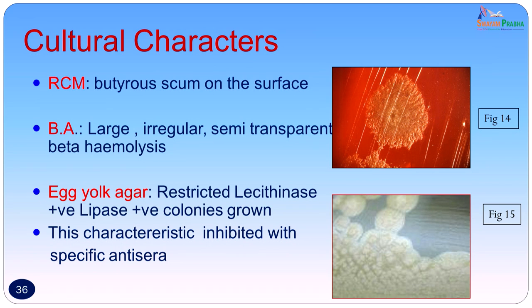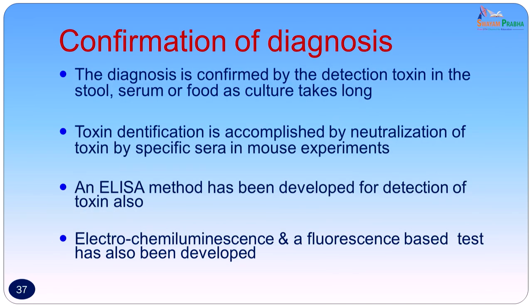If half the plate is covered with antitoxin and colonies are streaked across, both the lecithinase and lipase characteristics of the colony are inhibited. Confirmation of diagnosis is required urgently because the disease is not very common. The diagnosis is confirmed not by detection of the organism but by detection of the toxin in the stool, serum, or food, as culture takes almost seven to eight days. Toxin identification is accomplished by neutralization of the toxin by specific sera in mouse experiments. Tests such as ELISA and a fluorescent-based electrochemiluminescence test have also been developed to detect the toxin, which are much simpler than the animal tests used in the past.